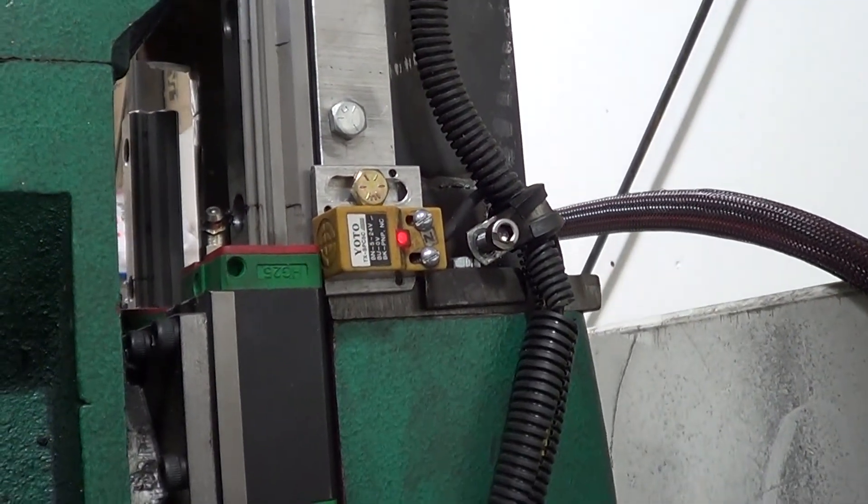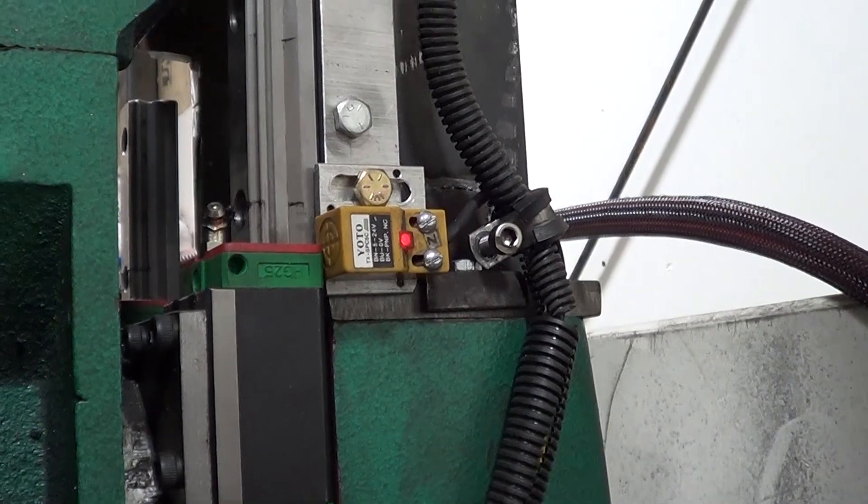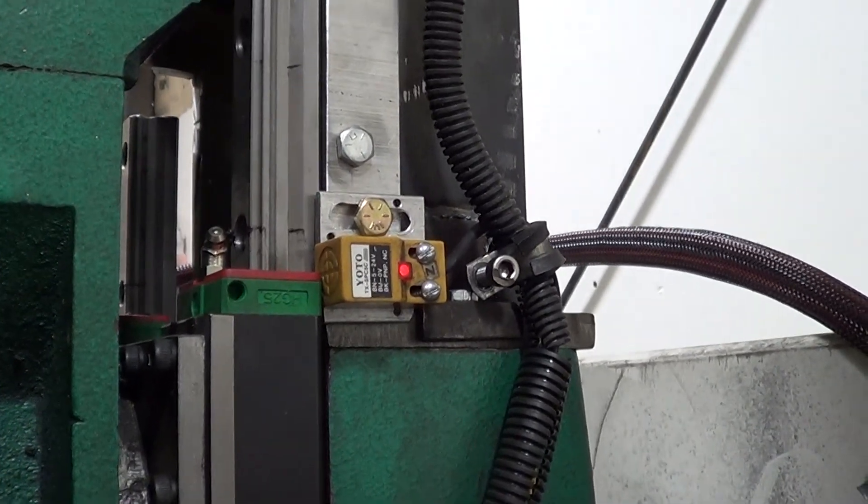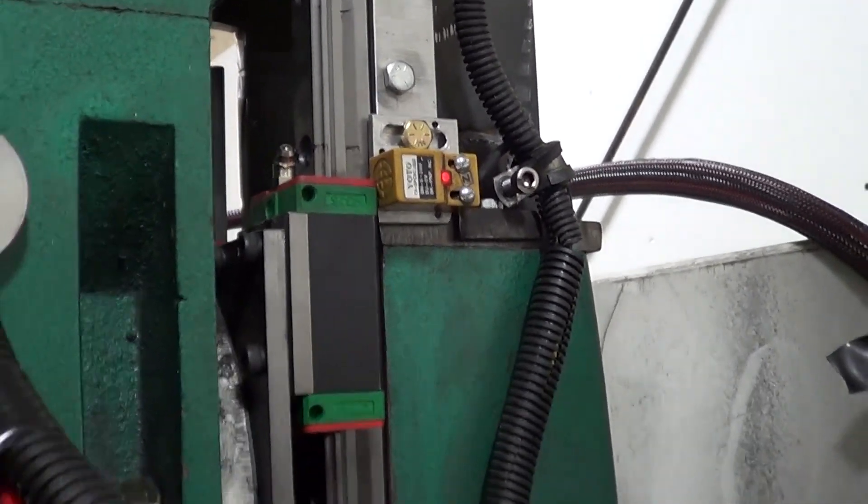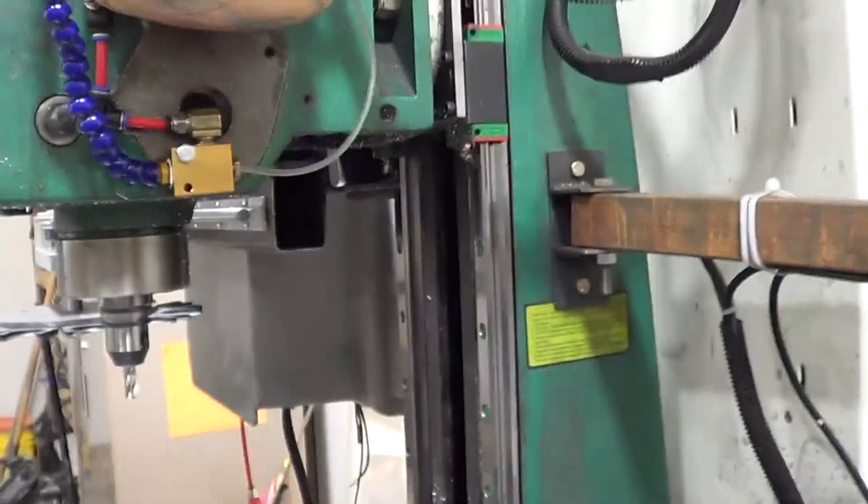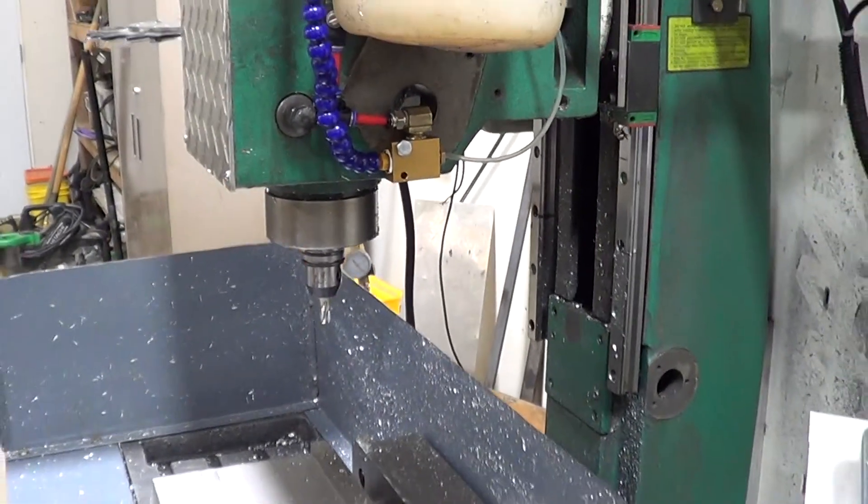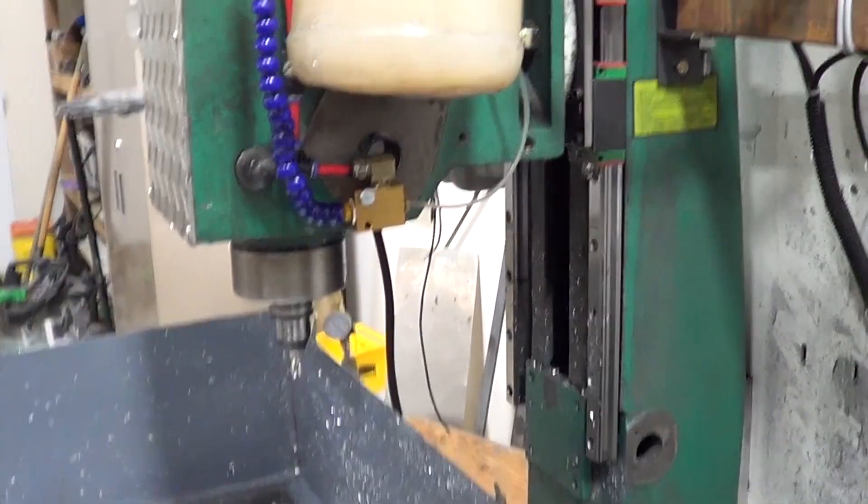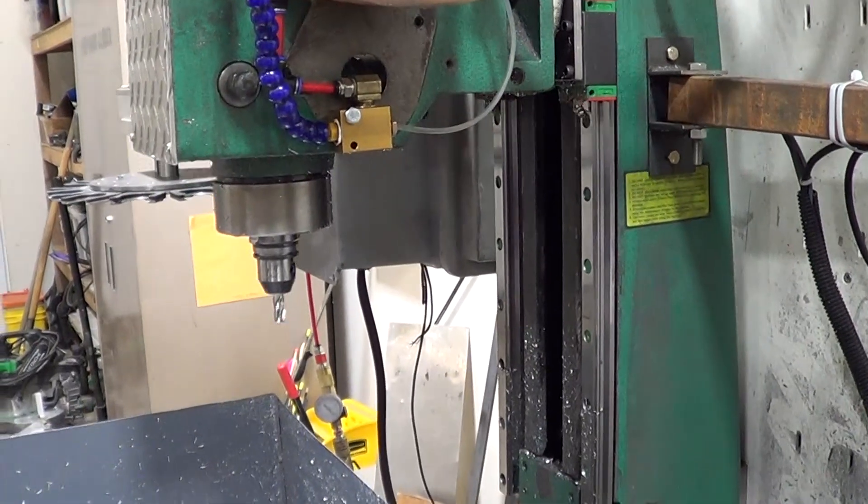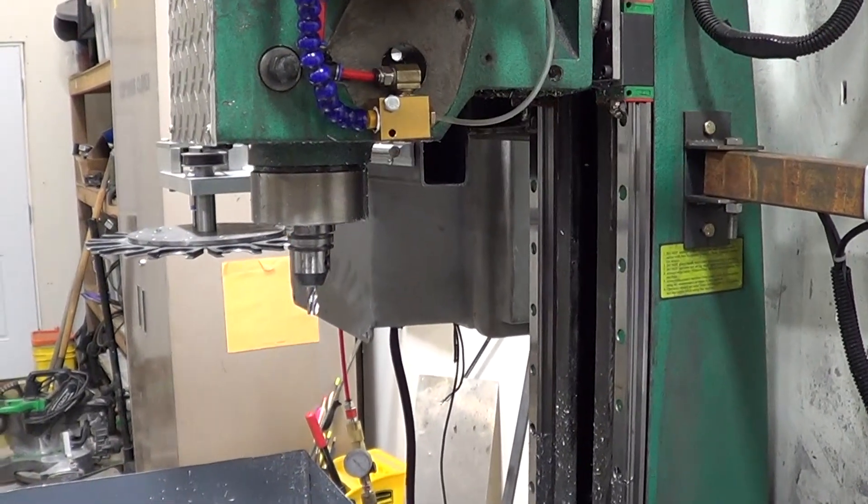One of the nice things is here's the limit switch. I'm gonna make a metal tab - I think you get a little bit better accuracy out of the Z home. Nice thing is I went from a max of 75 inches per minute to 150, which really makes the Z movement quite a bit nicer.